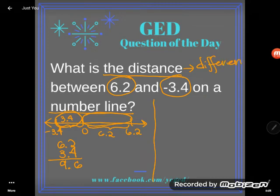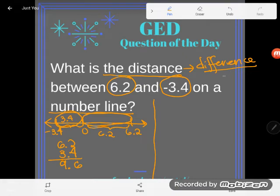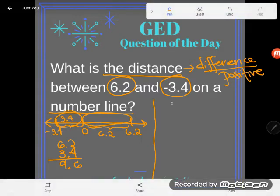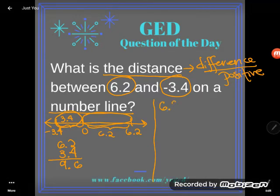You can do this mathematically by subtracting the two numbers. Now do remember though that difference is supposed to always be positive, so I'm going to jimmy rig the system by starting with the larger number. So 6.2 is larger, and then from that I'm going to subtract. Now careful, I'm not subtracting 3.4, I'm subtracting negative 3.4.